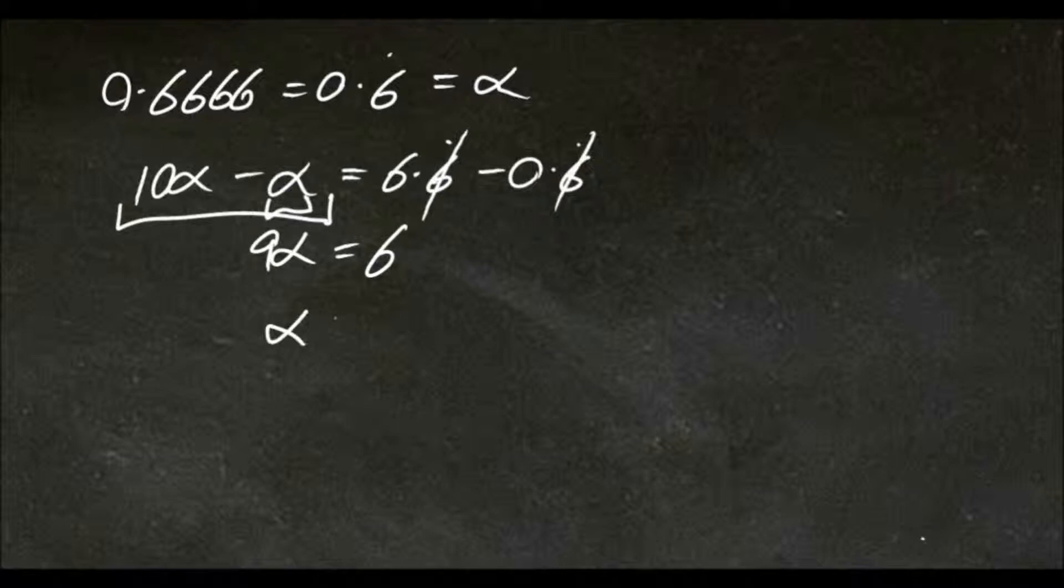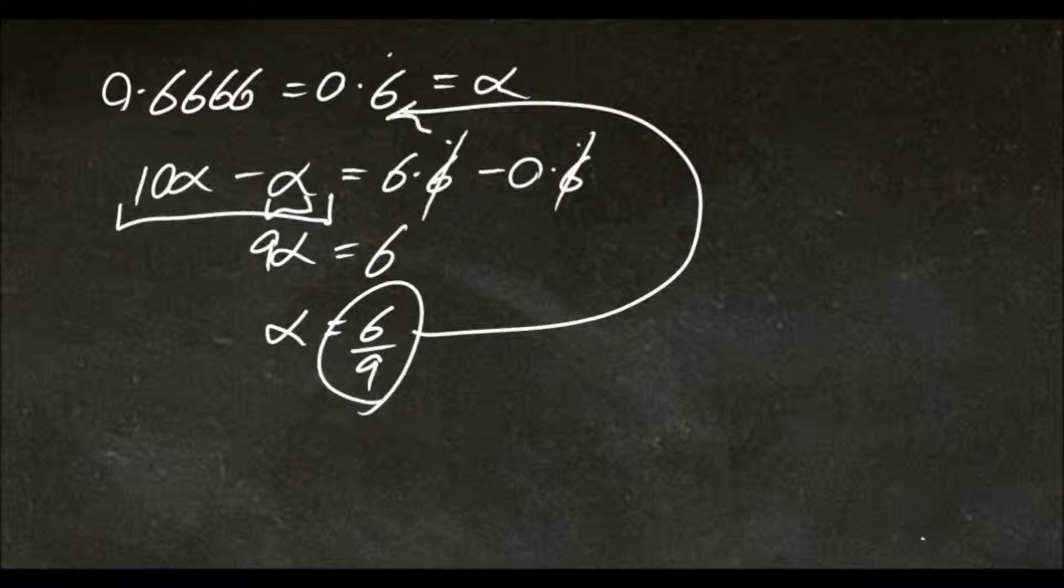Rearranging this, we'd get alpha equals 6 over 9. So that means that's our exact ratio which gets to this repeated decimal.